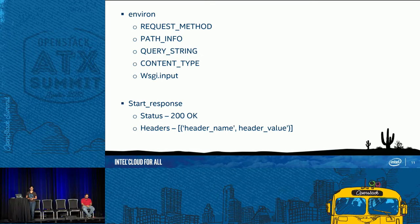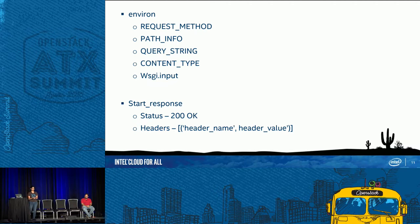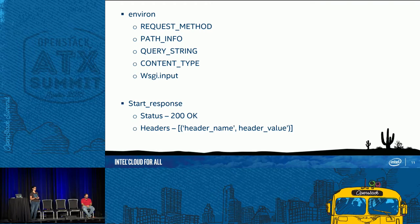The environment dictionary contains CGI variables and WSGI variables. The most commonly used ones: request method (GET or PUT), path info (what is in the URL), query string, content type (type of data being passed), and wsgi.input (your actual data). Start_response is also a callable, with two required positional arguments, plus an optional third argument — an exception — for when the application traps an exception and wants to display it back to the browser.